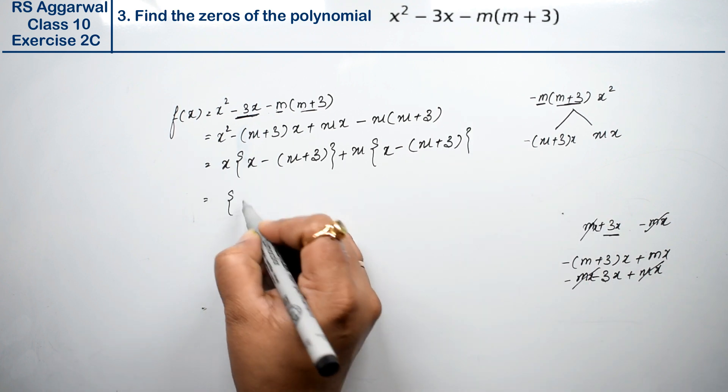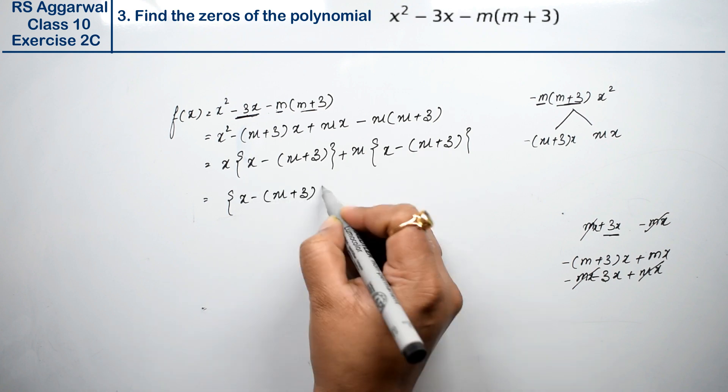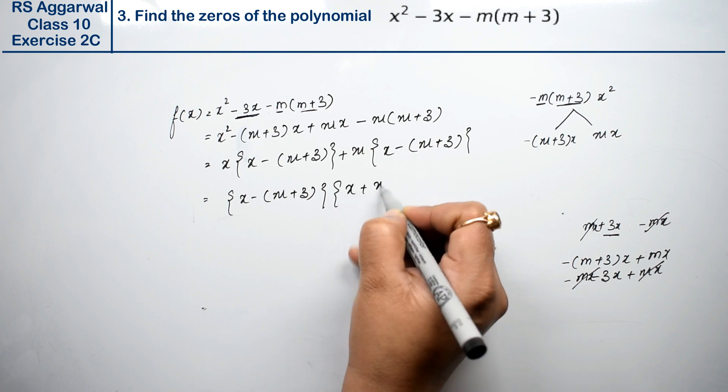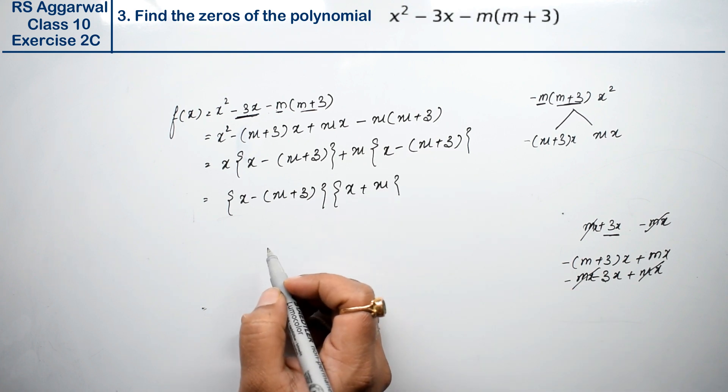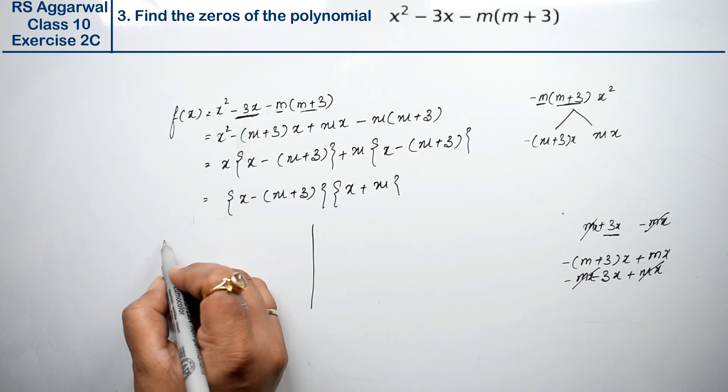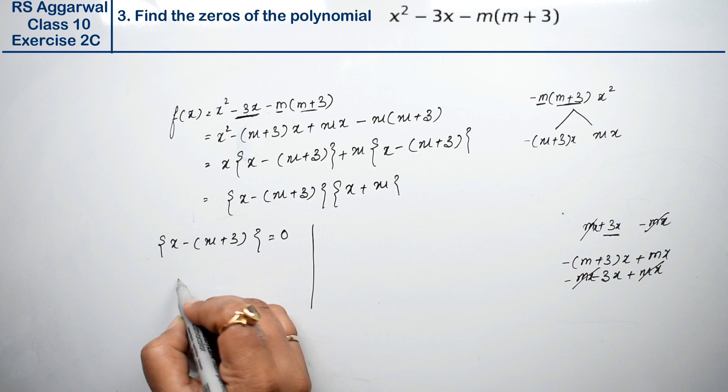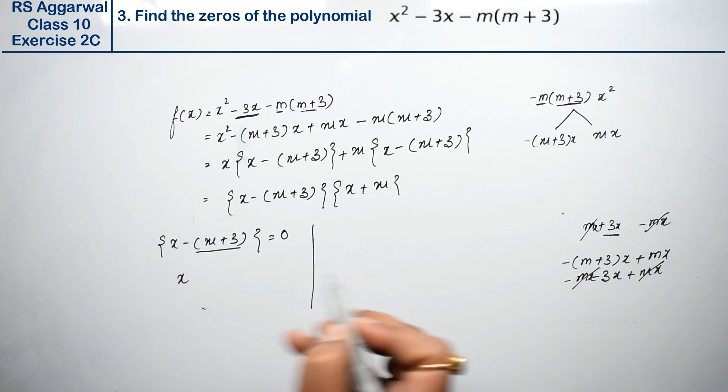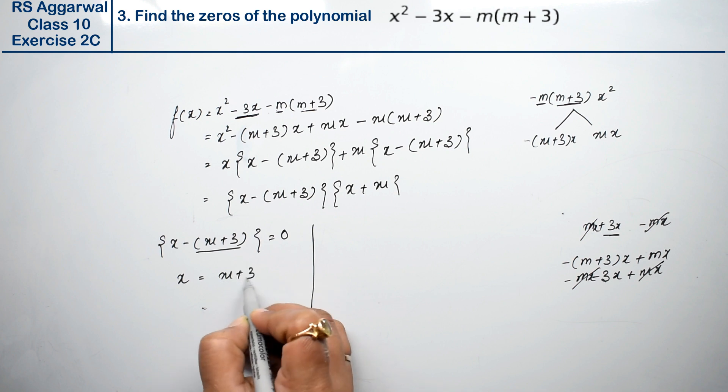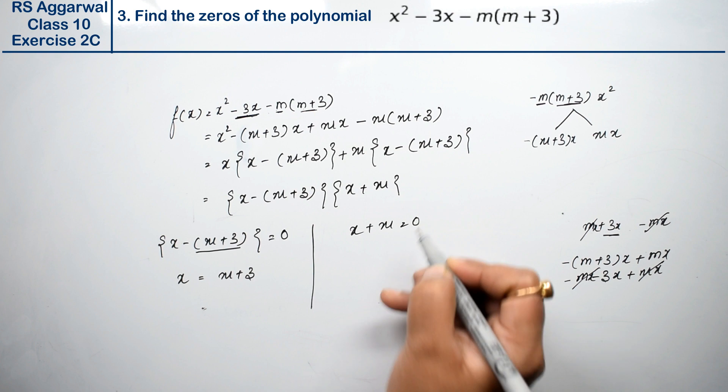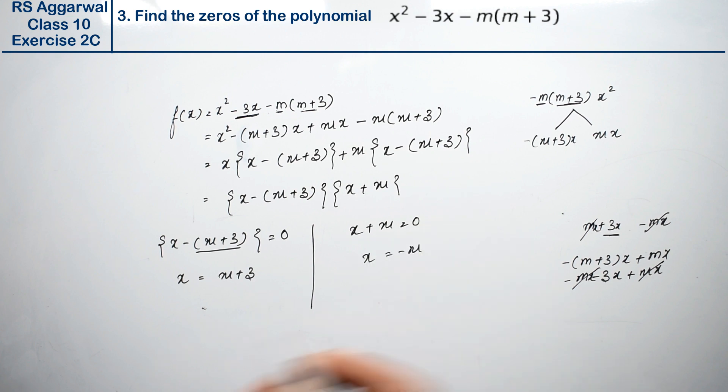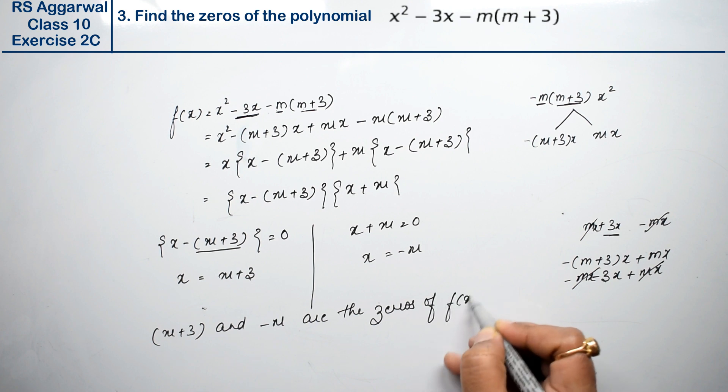Now we have to find the zeros of the polynomial. So we will equate these two to zero. So x minus (m + 3) equals zero. What is the value of x? It is minus. Crossing the bracket, it becomes plus on the other side, m + 3. Similarly, x + m equals zero. m is plus, going to the other side it becomes minus m. These are the zeros of f(x). Answer.